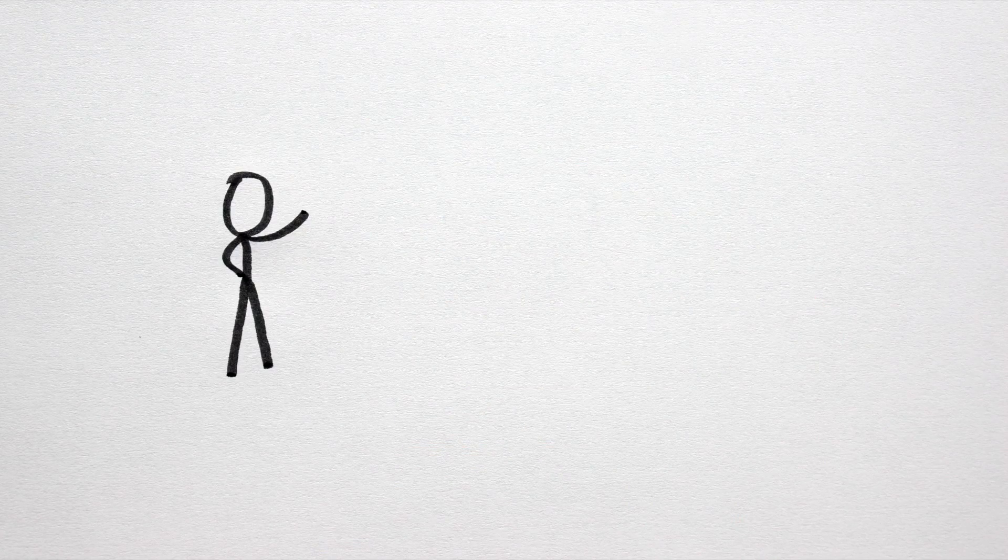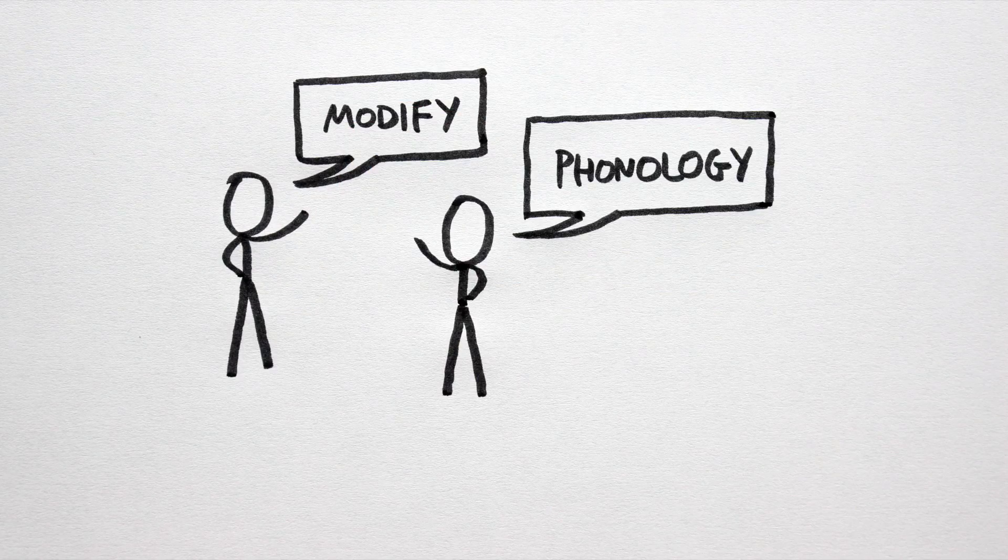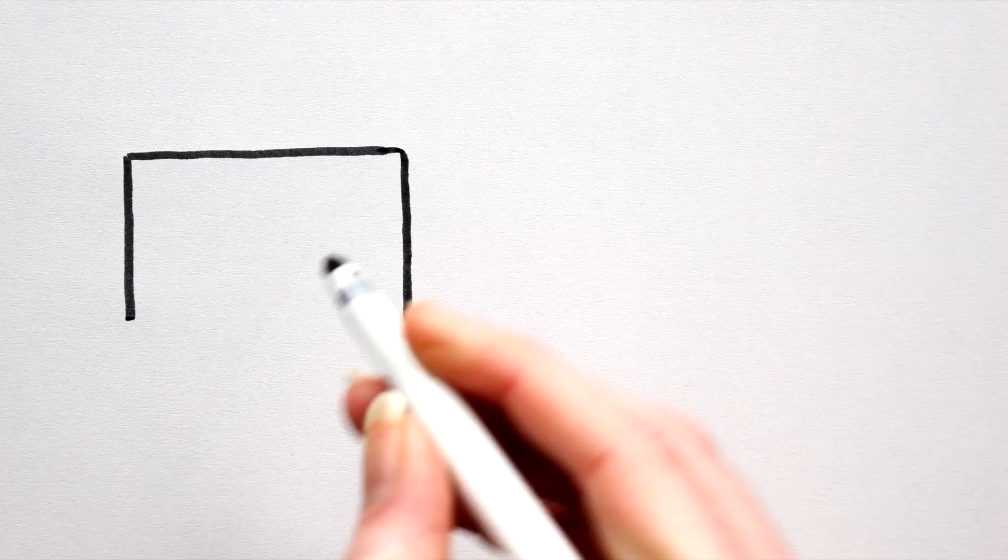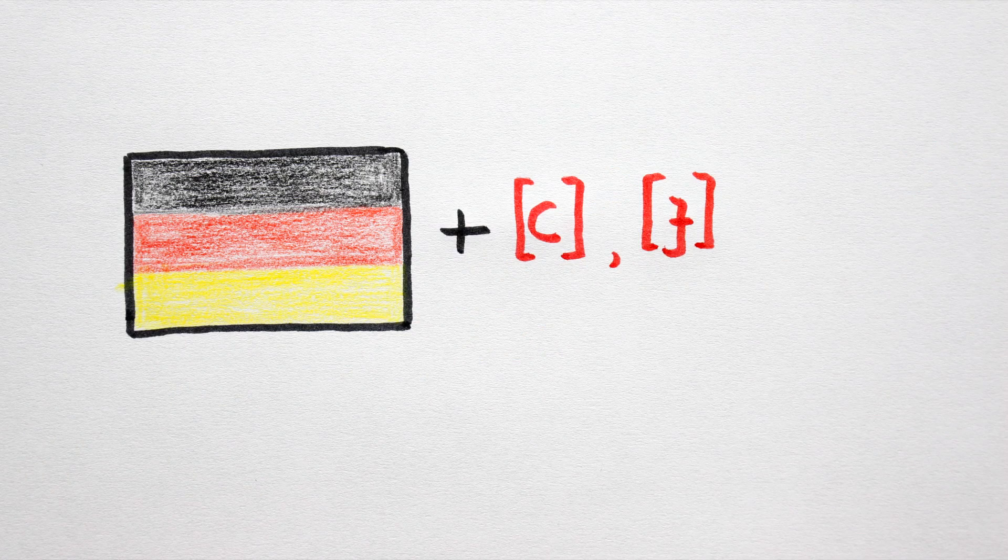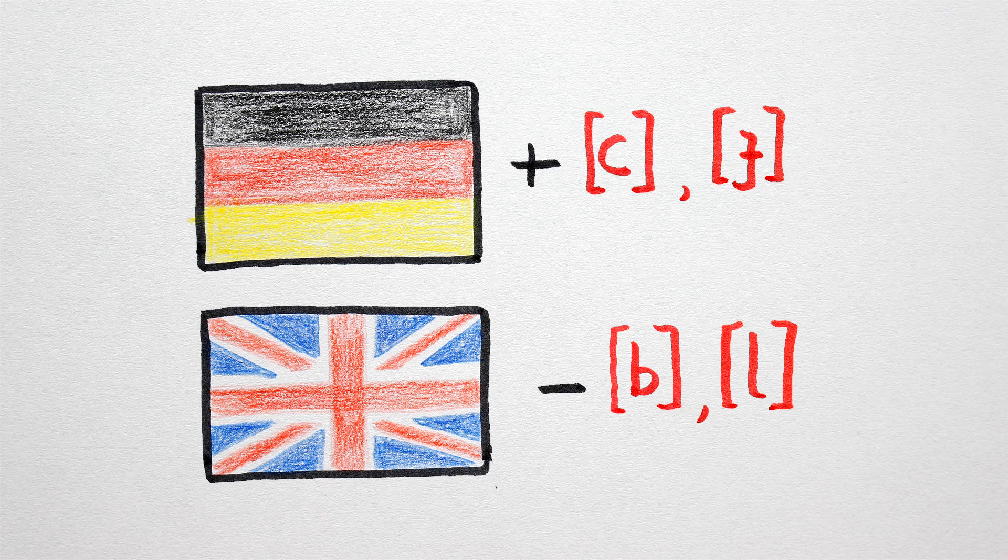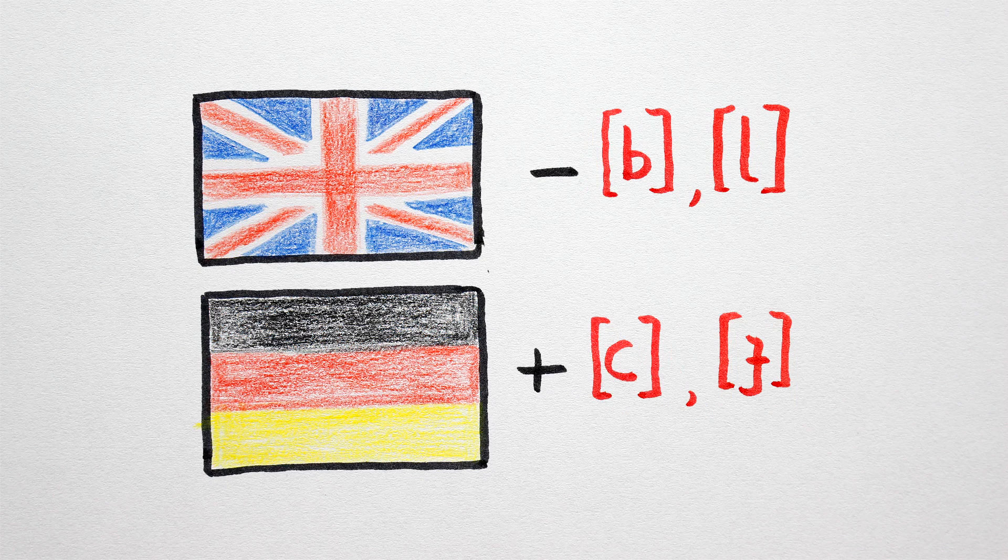Another way of making a conlang seem familiar yet sufficiently different is to modify existing phonologies. Imagine English without a /b/ or /l/ sound, or German with a /dʒ/ or /ʒ/ sound. I'm a staunch advocate of less is more when it comes to sounds. So in terms of adding to or subtracting from existing phonologies, the removal of features always trumps the addition of features. Why?